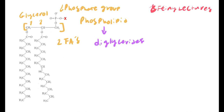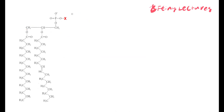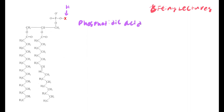You may wonder why there is a red X on the phosphate head. Sometimes this X is a hydrogen. If you have a hydrogen on that oxygen, the molecule becomes a phosphatidic acid. It doesn't happen very frequently — it's just a small occurrence.